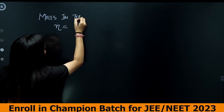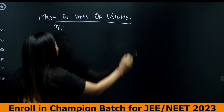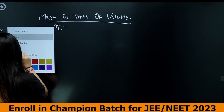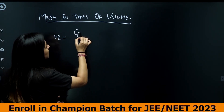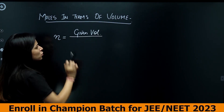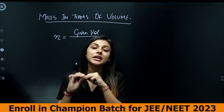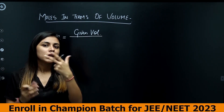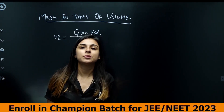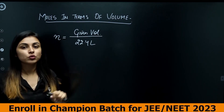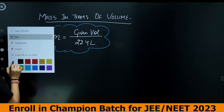So to find number of moles in terms of volume: number of moles = given volume ÷ 22.4 liters. There will always be some given volume, and the reference value is 22.4 liters because that is the volume occupied by 1 mole of any gas at STP.